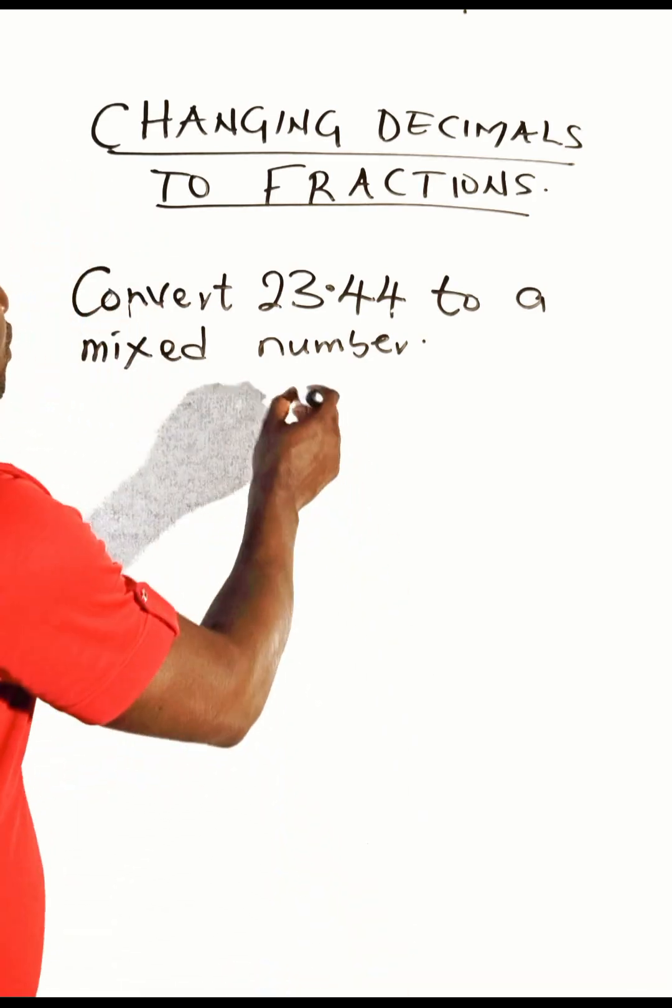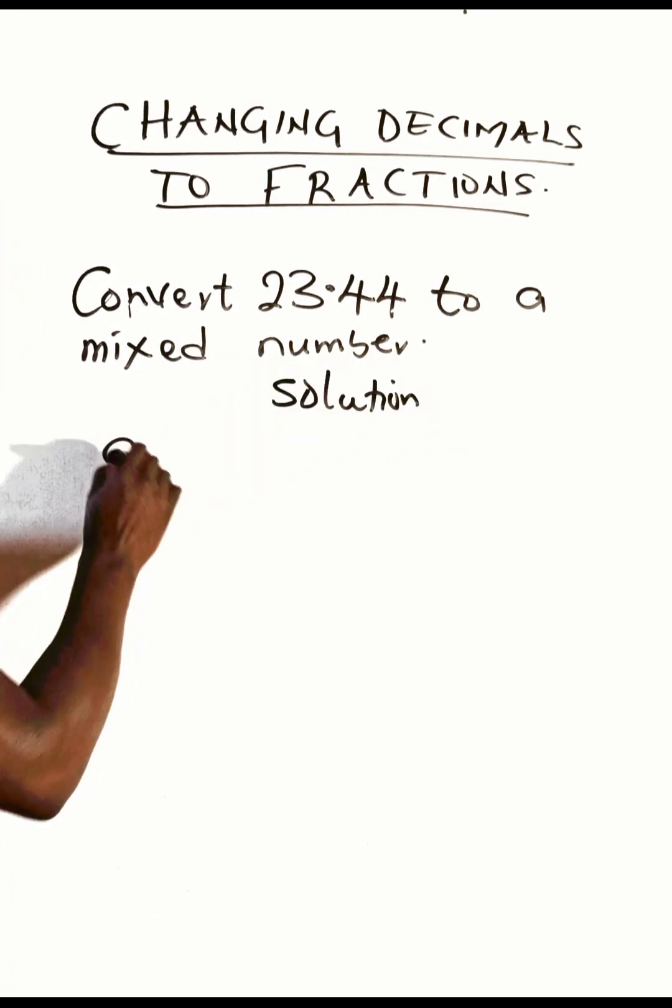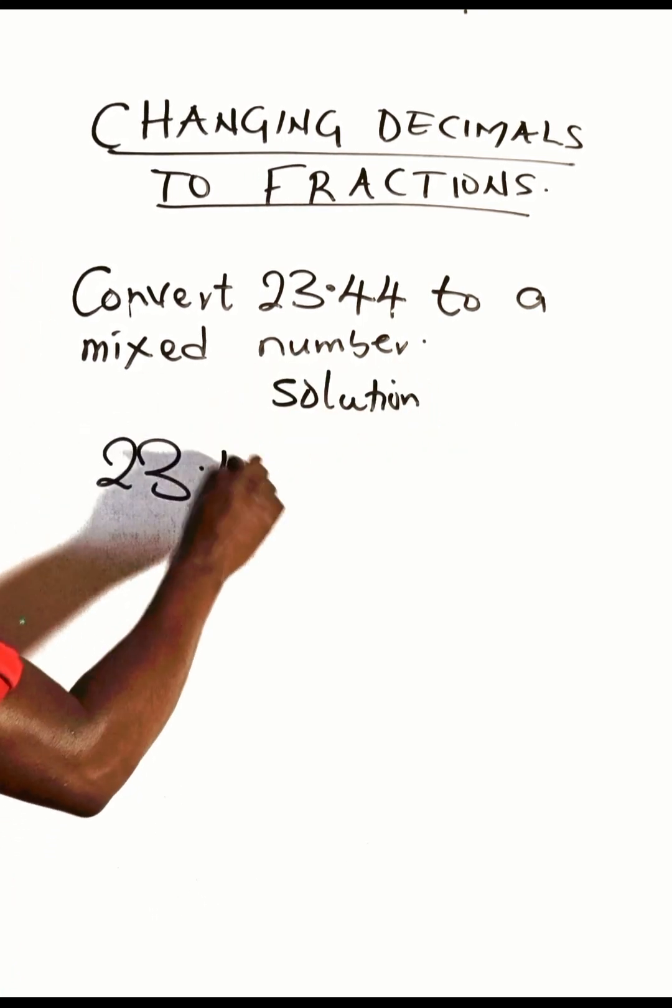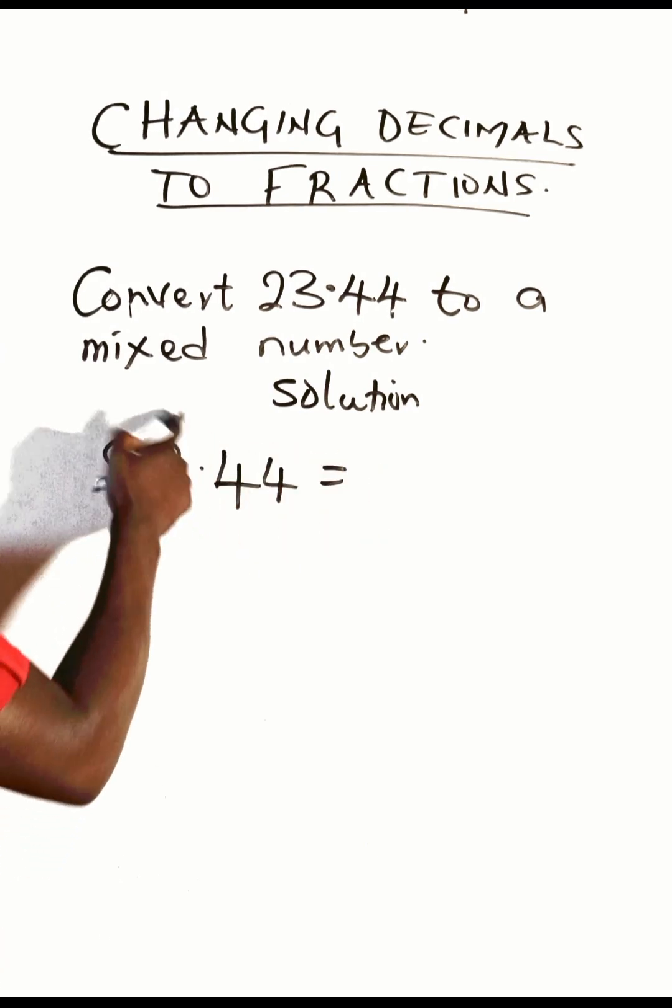So what do we do? It is simple. 23.44. First of all, let's separate the whole number part from the decimal part.